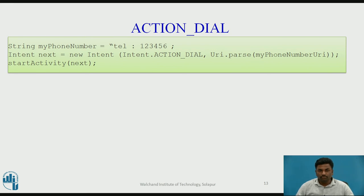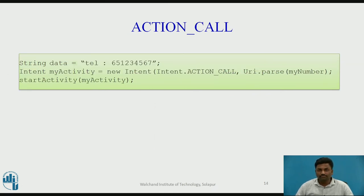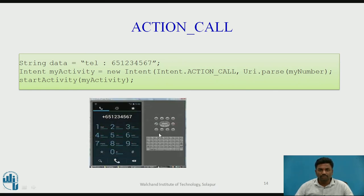ACTION_DIAL: when you do dialing on your mobile phone, you put a dial and a dialer keyboard will appear. This is one type of activity achievable through intent. ACTION_CALL: when you make a call to someone and press the call button, you will be moving to the calling screen. These are all different types of activities which can be achieved through intent.